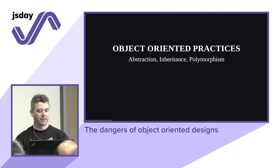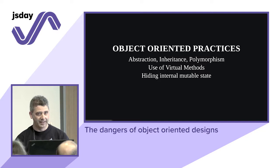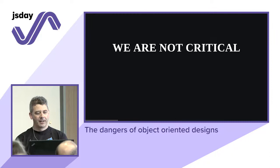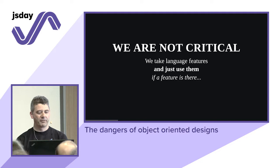The hallmark principles are abstraction, inheritance, and polymorphism — using virtual methods for polymorphism and hiding internal mutable state. That should be the idea, but it usually doesn't happen. The point is: how do we write object-oriented code? We are not really critical. We take language features and just use them — if a feature is there, we think it must be for our own good.